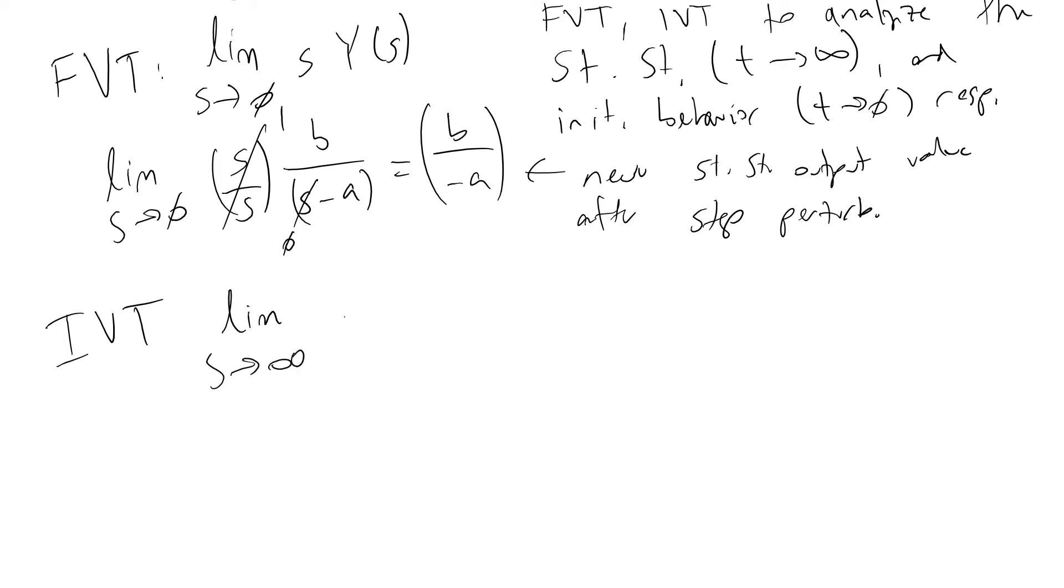As s goes to infinity of s times y of s. And this is equivalent to limit as s goes to infinity of s over s, so 1 times b over s minus a. And as s goes to infinity, the denominator will dominate. Consequently, this will equal 0.